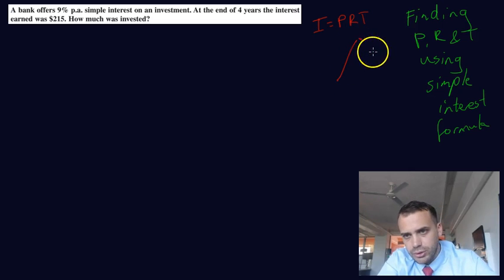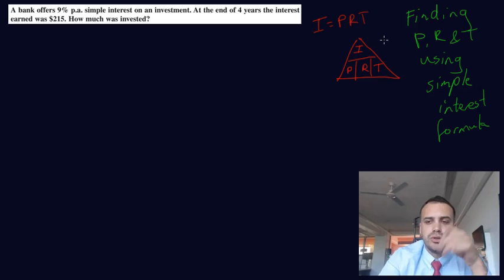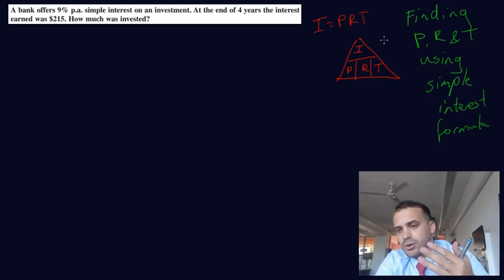So our formula is going to look more like this now. I equals P, R, T. And using the triangle method, you can write four different formulas now. You can write a formula for P, R, T, or I. Here's how it works.